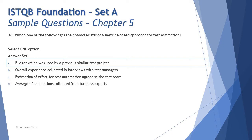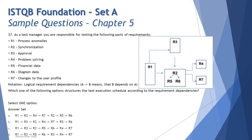The right answer is A — 'budget which was used by previous similar test project' is the matrix-based approach for test estimation, whereas the other three options are expert-based approaches.